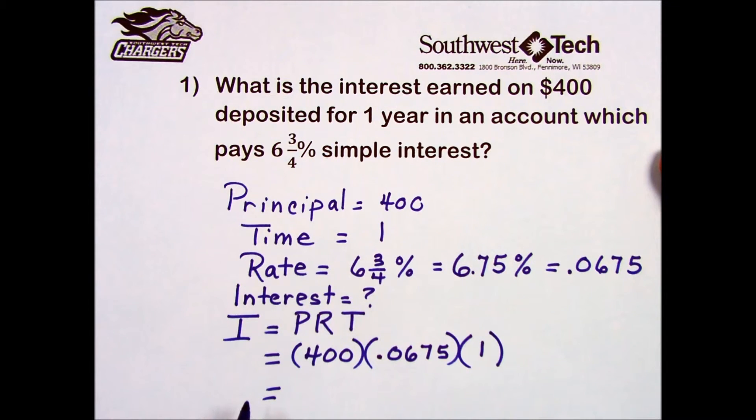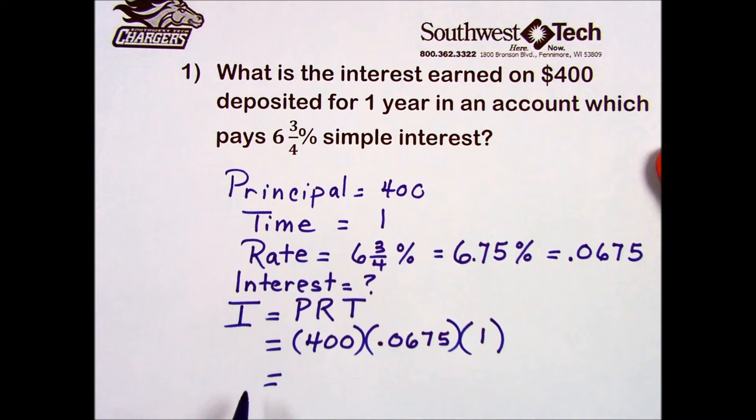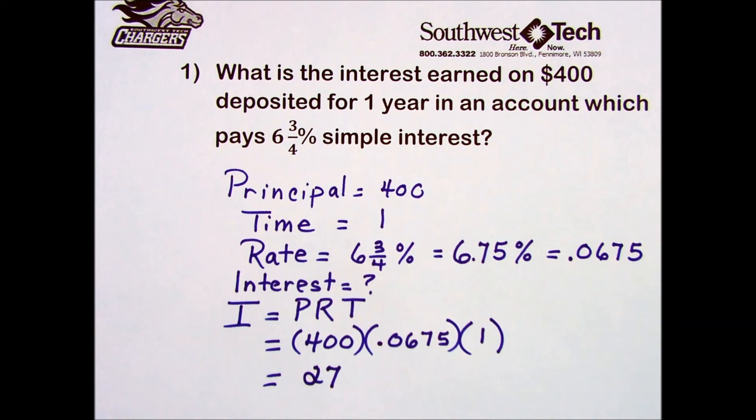To simplify, we multiply those three values together, resulting in an answer of 27. So the interest earned on this account is $27.